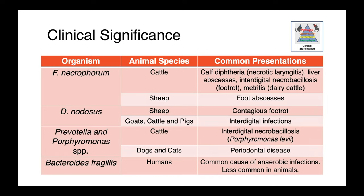In dogs and cats, these organisms play a role in periodontal disease. Bacteroides fragilis I'm only mentioning for completeness — it is an important anaerobic pathogen in people but is less commonly identified in animals.